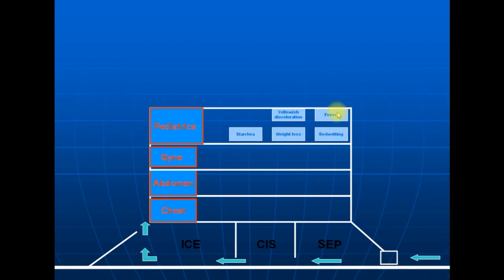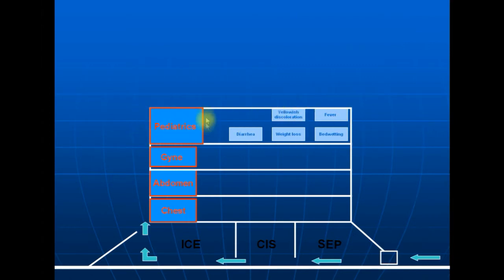The expected cases include fever, the calmest one, bedwetting, yellowish discoloration, weight loss, and diarrhea. As per our strategy, we usually find the similarities between those cases and put them into a single entrance. The single entrance usually serves all the cases.